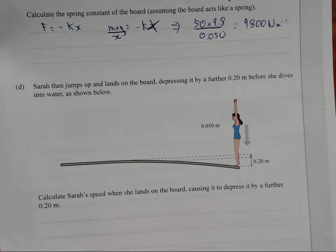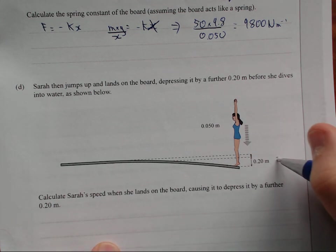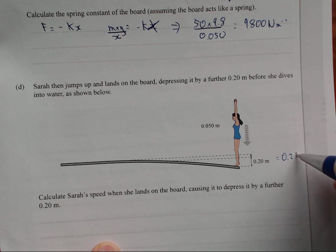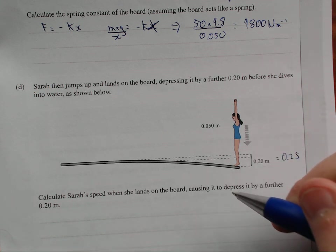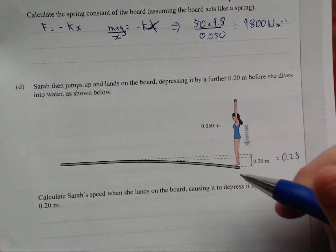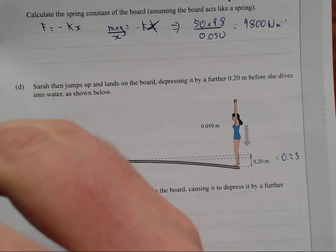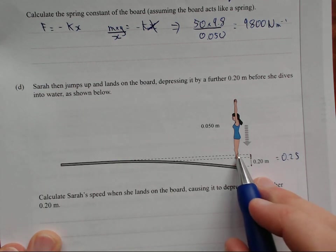Sarah then jumps and lands on the board, depressing it by a further 0.2 meters before she dives into the water as shown below. Calculate Sarah's speed when she lands on the board, causing it to depress by another, or by a further 0.2 meters. So, the total displacement she has gone down is now equal to 0.25, because it's that 0.05 plus that 0.2. So, she actually jumped up and then she came back down again.